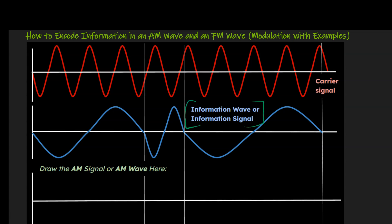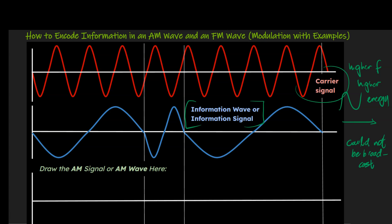Let's start with our information wave — the information that we want to send. This could start out as a sound, especially if we're going to use an AM wave as an example, and that sound is translated into a transverse wave, where the media moves at right angles to the direction of the wave itself. The carrier signal is important because it's a higher frequency wave with higher energy and can be broadcast for much longer distances from a radio tower. If we tried to broadcast the information signal directly, you would need a radio tower that would be like half a mile high — it simply does not have enough energy to transmit.